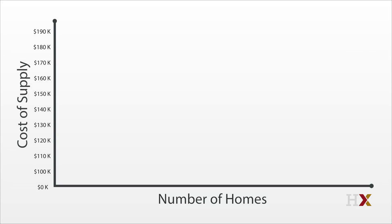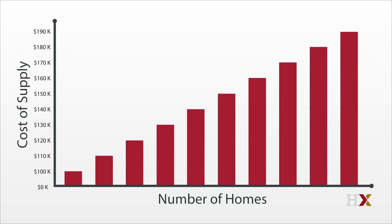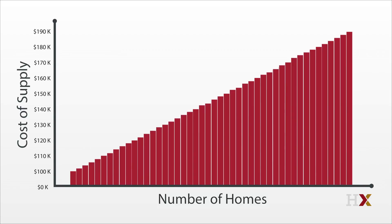Now we have two million different building costs. Let's order those costs from the cheapest to the most expensive, because surely the cheap, easy sites will be used first. We have a bar for each home representing the building cost, perhaps starting at $100,000 and then going to $110,000 and $120,000 and so forth. Just like we did for demand, we start smooshing the bars together, because the number of sites is really big and the difference between a lot of these sites is going to be really small. And then a curve emerges.